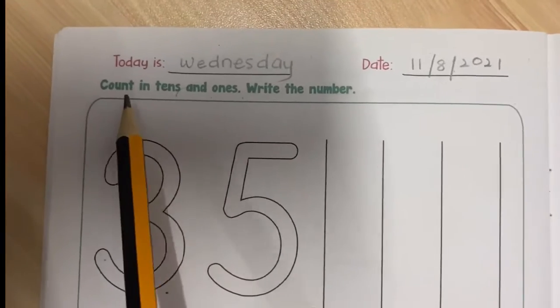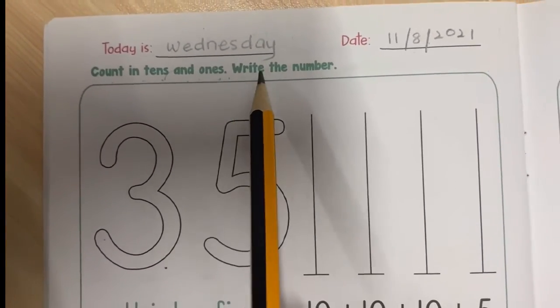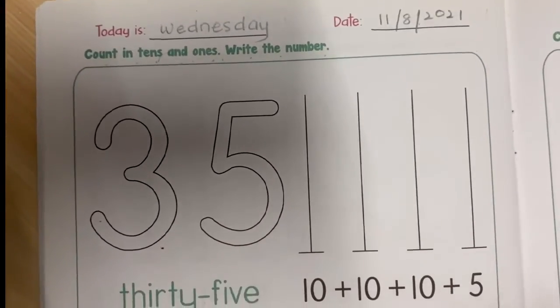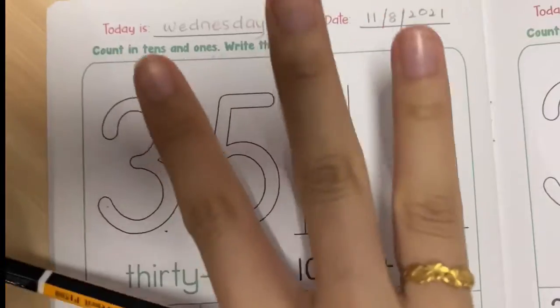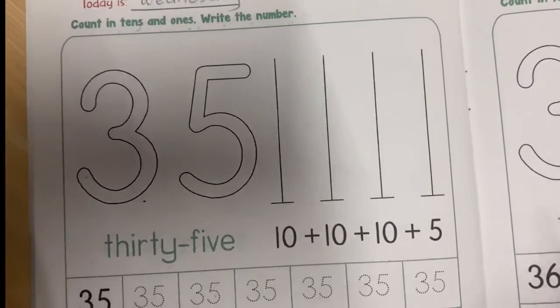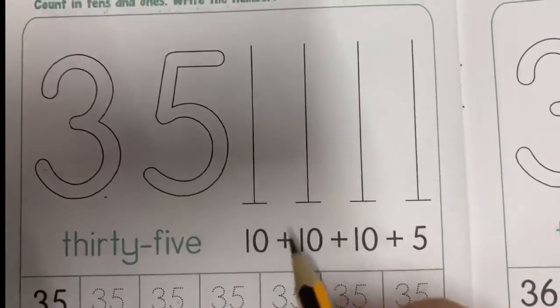Okay, count in tens and ones, write the number. Now you use your rainbow writing three colors and do this one. Now let's do bubbles. Let's count in tens and ones.